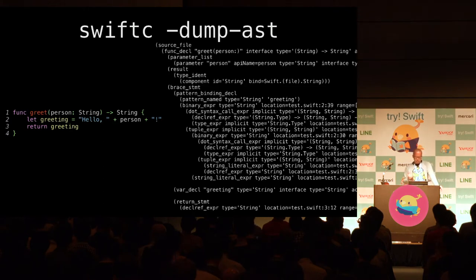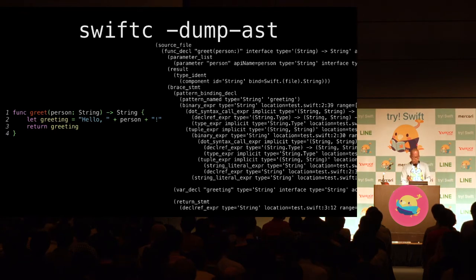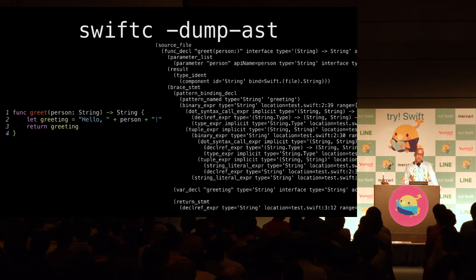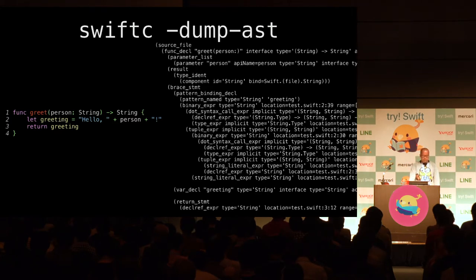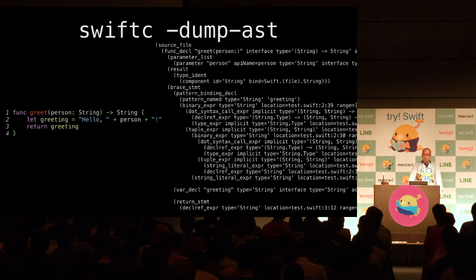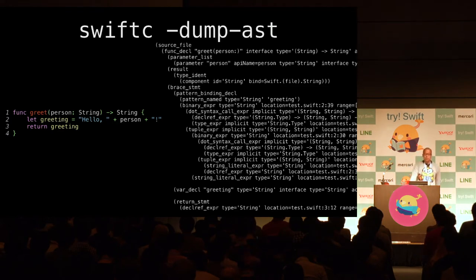The biggest advantage of dump AST is that all type information has been resolved, so it is greatly useful for metaprogramming that processes local variables or method arguments. Unfortunately, there is no tool to parse these ASTs, so if you'd like to use them you have to parse them yourself.